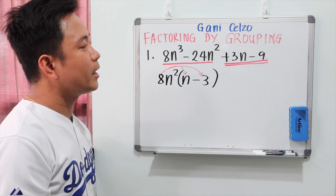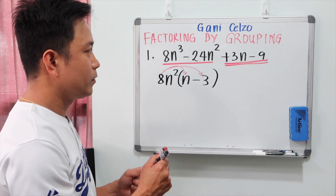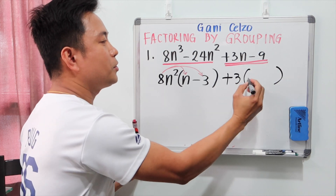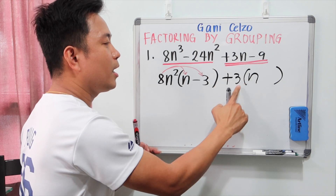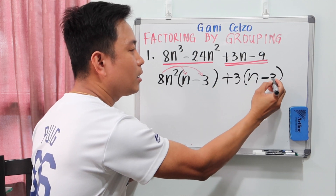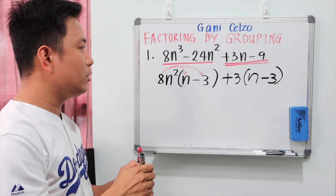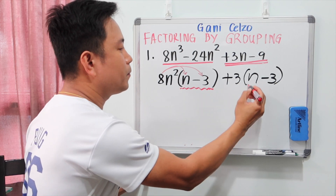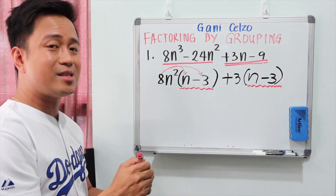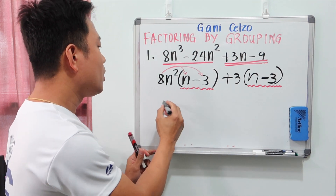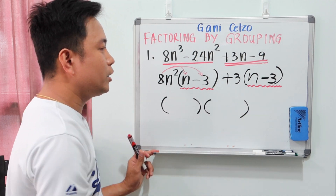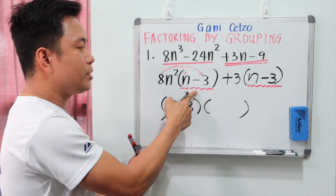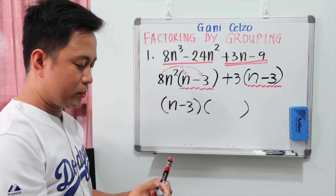For the second group, 3n minus 9, the GCF is 3. So we factor out the 3, and inside the parentheses 3 times n gives 3n, and 3 times negative 3 gives negative 9. One thing you need to observe here is the parentheses — each group has the same expression n minus 3 inside, and that's really important. When factoring by grouping, you take out that common factor n minus 3 from each group.